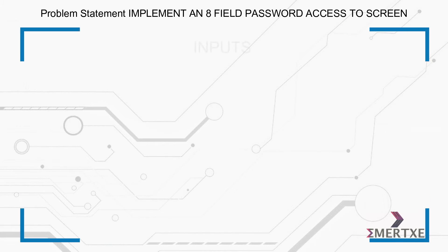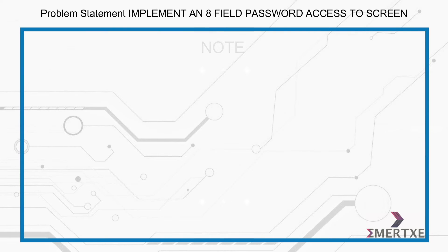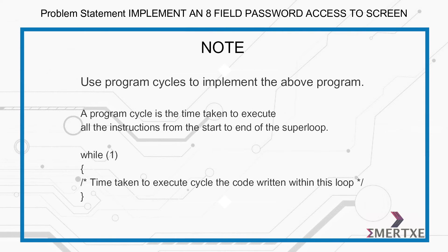The inputs required for this assignment are mks1 and mks2 as password keys. Please note to use program cycles to implement the above program. A program cycle is the time taken to execute all the instructions from the start to the end of the super loop.